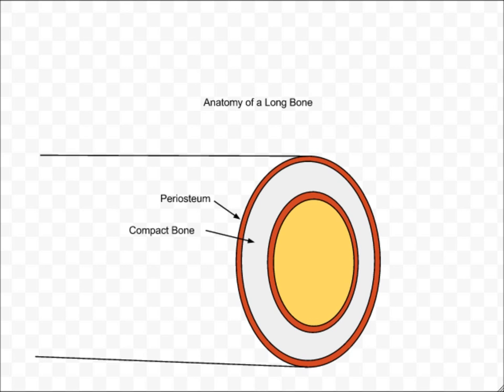Inside the periosteum is the compact bone. It is the compact bone which provides support for the body, and enough strength for locomotion and other forms of motion.